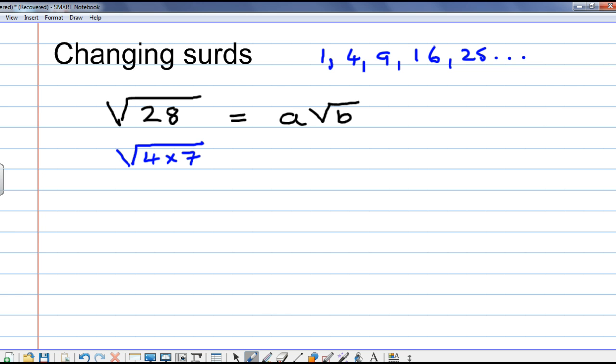So, 28 is the same as 4 times 7. Now, I decompose it. The square root of 4 times 7 is the root of 4 times the root of 7.